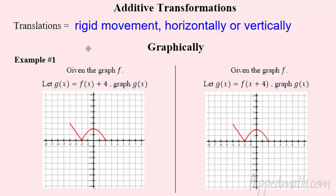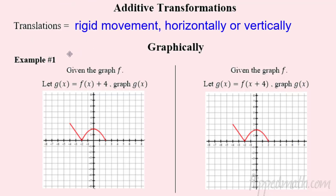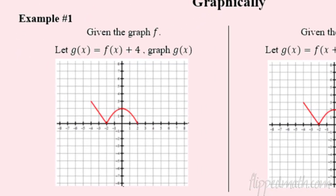What are translations? The whole idea is we slide things up, down, left, or right. These are called additive transformations — we add something to move them horizontally or vertically. They're called rigid movements because the shape stays the same, so it's congruent from the pre-image to the image.